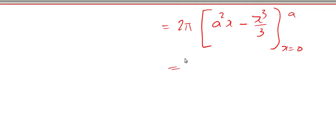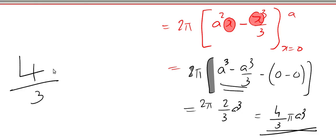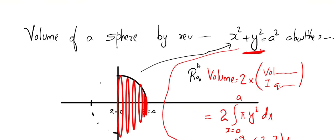Now, plug in upper limit. Instead of x, you can plug in the upper limit. And we get 2 pi and a square, a cube minus a cube by 3 minus 0 minus 0. And that will be 2 pi, 2 by 3 a cube. So the answer is 4 by 3 pi a cube. That's it. I am sure that you remember the volume of a sphere is 4 by 3 pi radius cube. Look at this. Isn't the same answer?